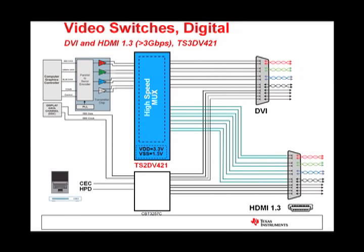The TS3DV421 is a four-channel differential two-to-one multiplexer/demultiplexer digital video switch controlled with one select input, or SEL. This switch has a wide bandwidth of over 3.8 gigabits per second, low crosstalk of minus 50 dB, off-isolation of minus 50 dB, low bit-to-bit skew of 0.1 nanoseconds, and low on-state resistance. Some of the applications of this switch are DVI/HDMI signal switching, differential DVI/HDMI signal multiplexing for audio and video receivers, and high-definition televisions.